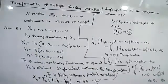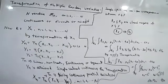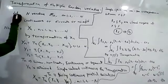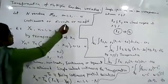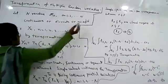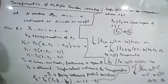Transformation of multiple random variables. Here we have considered n random variables x_n, where n is varying from 1, 2, 3, and so on. These n random variables may be continuous, discrete, or mixed random variables — it can be of any type.